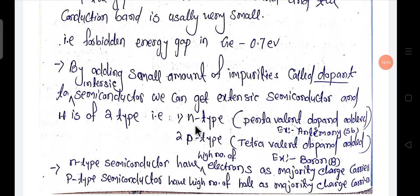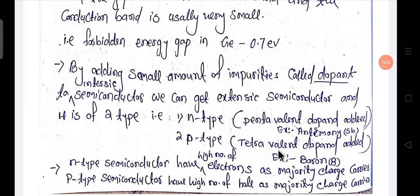The extrinsic semiconductor is of two types: N-type and P-type. N-type is formed when a pentavalent dopant is added — that means the outermost orbit of these atoms has five electrons. N-type semiconductor has a high number of electrons as the majority charge carrier.